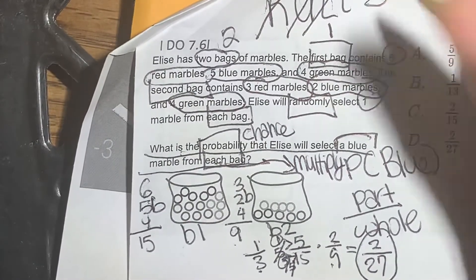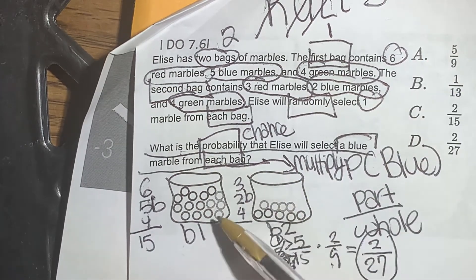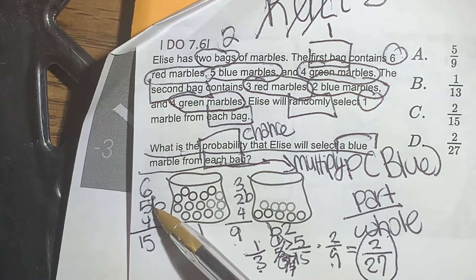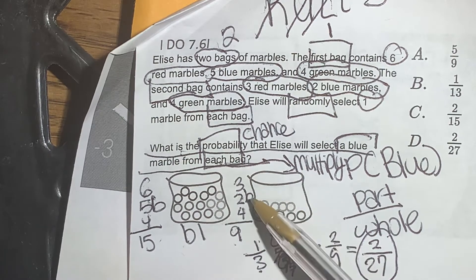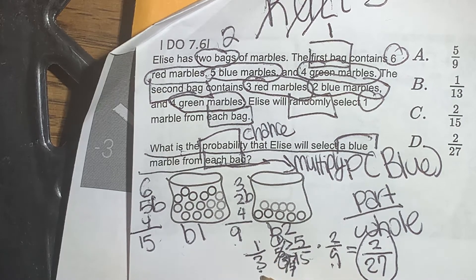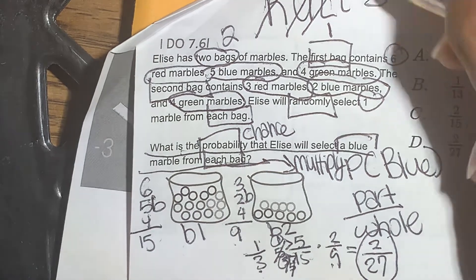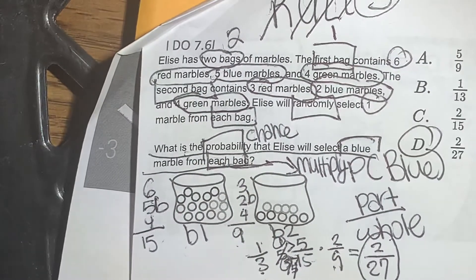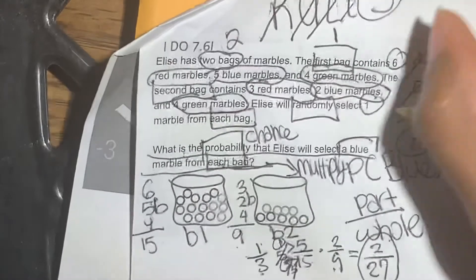So we've labeled and annotated. Our evaluation process was part over a whole — we did that twice because there are two bags. The probability of finding a blue marble from bag one is five out of 15. The probability from bag two is two out of nine. We did two out of nine multiplied by five out of 15, but five out of 15 reduces to one out of three. So two-ninths times one-third is two over 27. The answer is D.